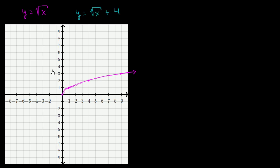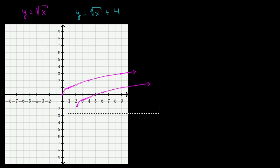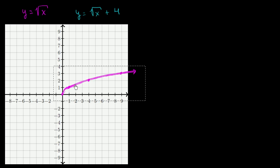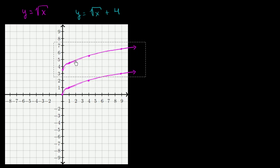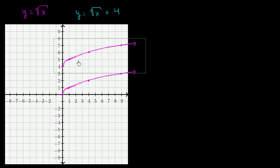So that would be like taking this graph and shifting it up 1, 2, 3, 4 — it would look like that. That was pretty straightforward.